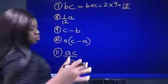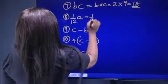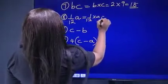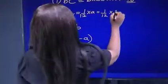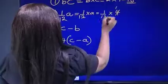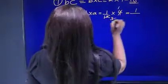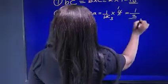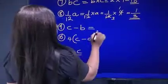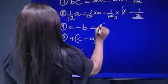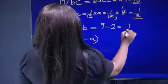What is the value of 1 over 12a? That is 1 over 12 times a, which equals 1 over 12 times 4. Simplifying: 4 into 4 is 1, and 4 into 12 is 3. So the answer is 1 times 1 over 3 times 1, which is 1 over 3. Now c minus b: the value of c is 9 and the value of b is 2, so 9 minus 2 equals 7.